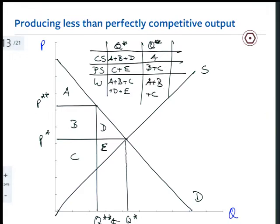So consumer surplus goes from A, B to A. So consumers lose B, minus B. Producers used to have C and E. Now they have B and C. So they lose E, they gain B. So plus B, minus E.